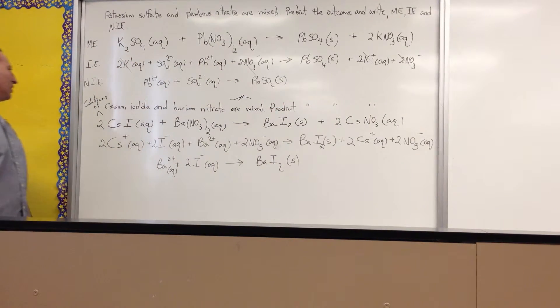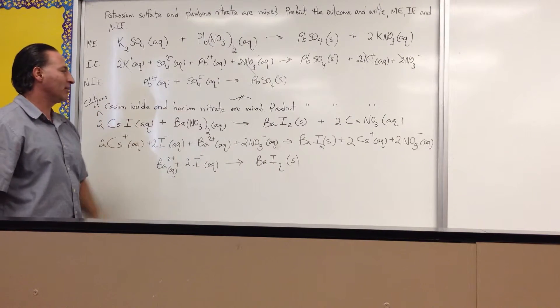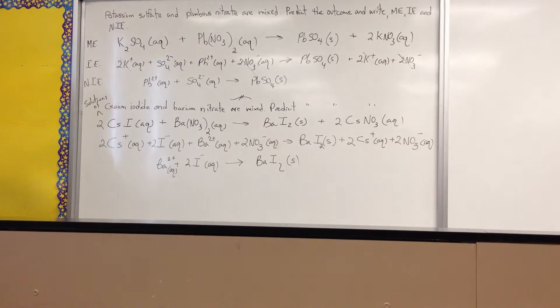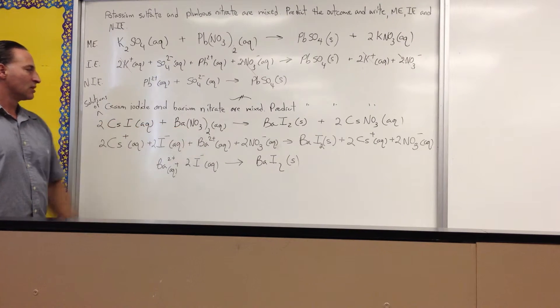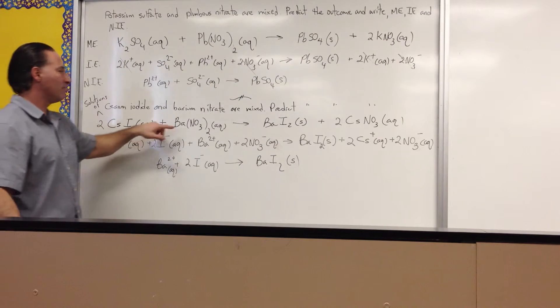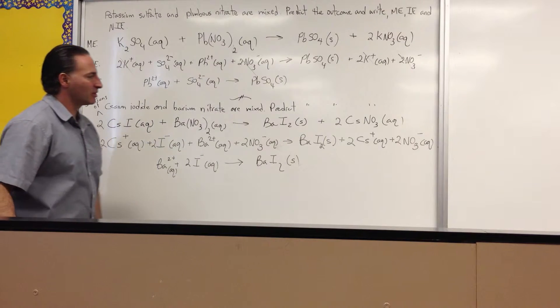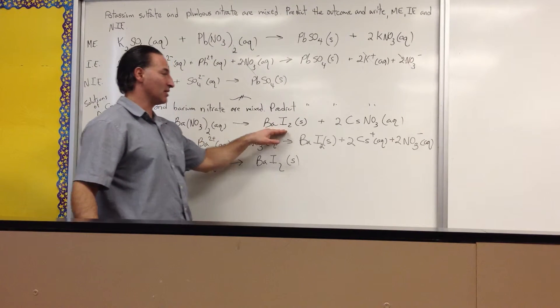The next example, I asked you to predict the outcome of cesium iodide solution and barium nitrate solution if they're mixed. So, here are the two substances. Cesium iodide, aqueous. Remember, it's mixed in water. Barium nitrate, aqueous. When you mix the two together, I wasn't sure about the solubility of this. I think barium iodide is not soluble. I'll have to double check.